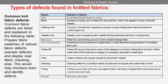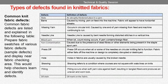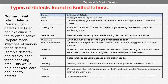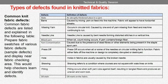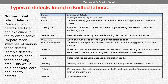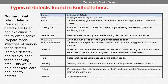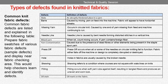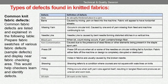Needle line: caused by a bent needle forming distorted stitches in a vertical line. Mixed yarn: when lot or count mixing occurs, or if a yarn contains foreign fiber. Yarn contamination: caused by the presence of dead fibers or other elements in the staple spun yarn. Press off: occurs when all or some of the needles on the circular knitting machine fail to function.